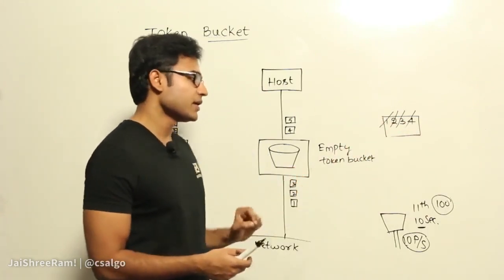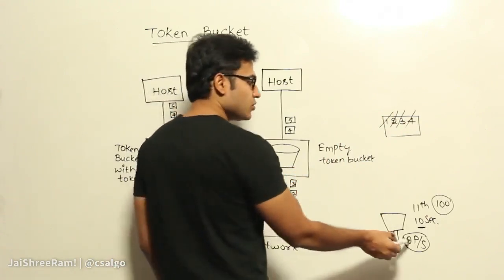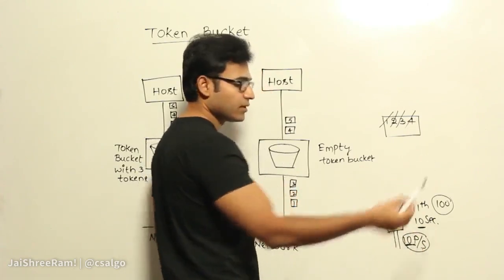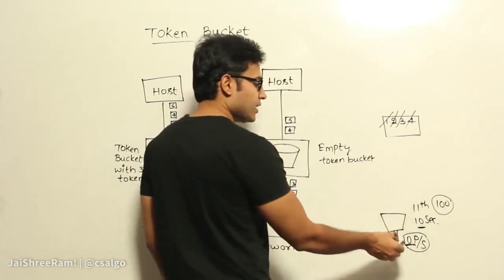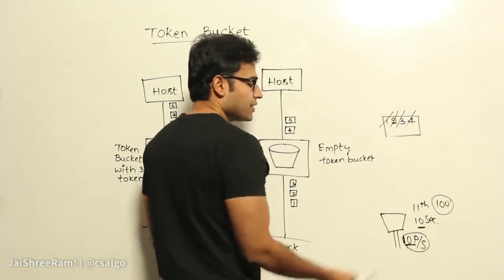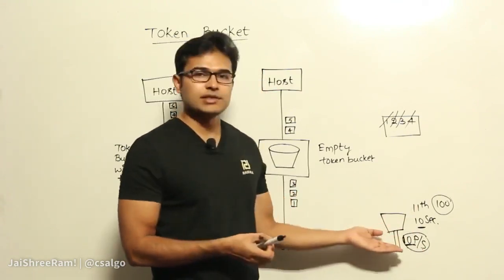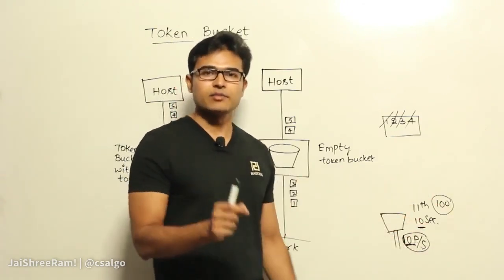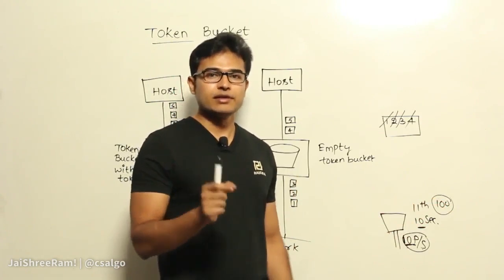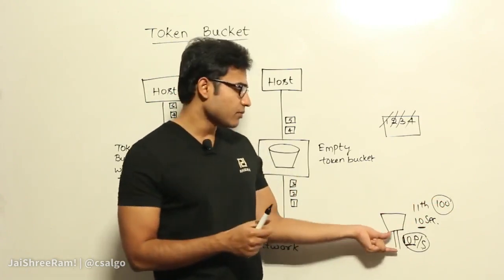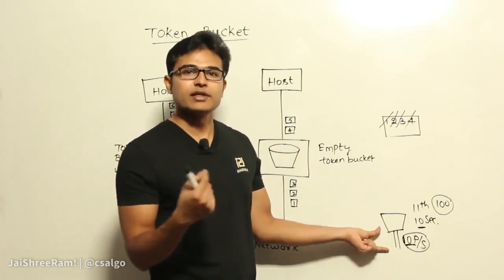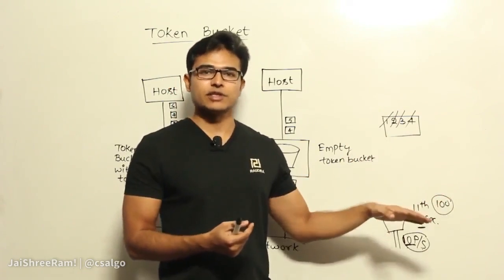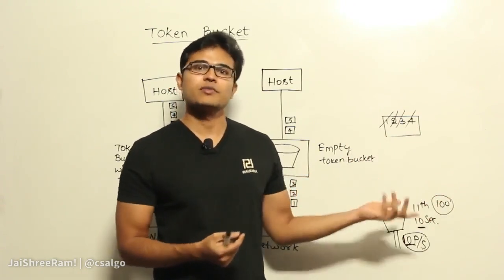Similarly, in the leaky bucket, even though you were supposed to send packets at 10 packets per second and had that permission, you didn't use it. Now you cannot say that for the last 10 seconds you didn't use this capacity, so let me use it now. You cannot do this in the leaky bucket — if a sender didn't use its permissions to send data, it cannot claim them later.